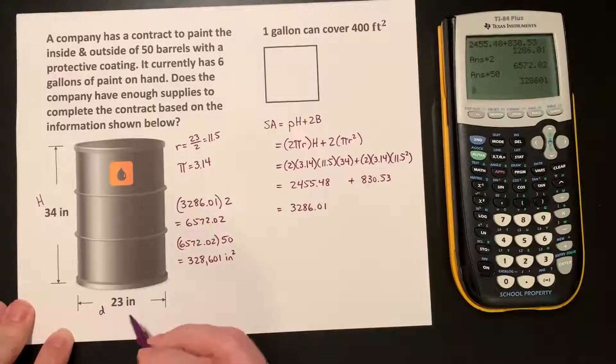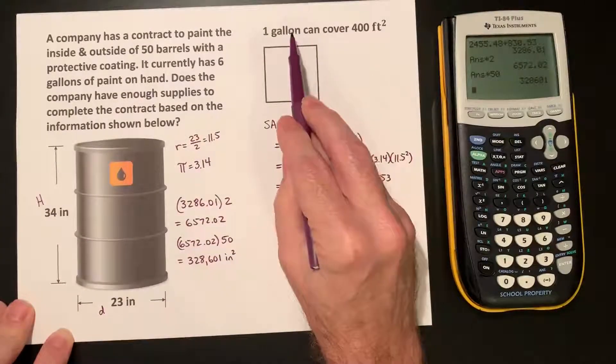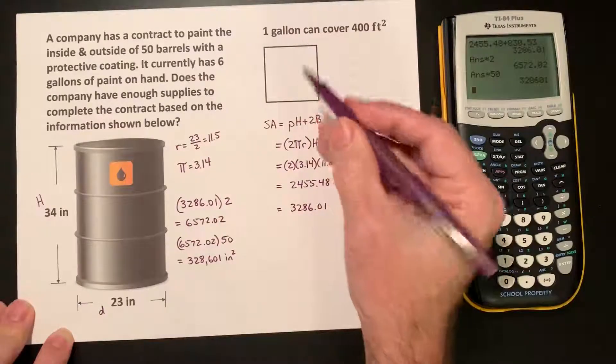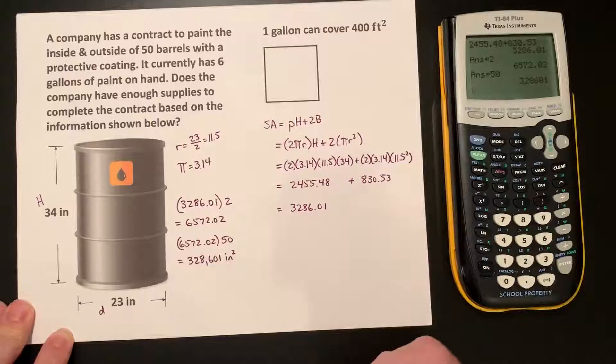Now, we have inches squared here, but 1 gallon of paint covers 400 feet squared. So, we need to convert feet squared into inches squared.